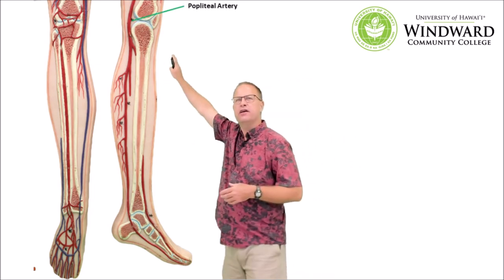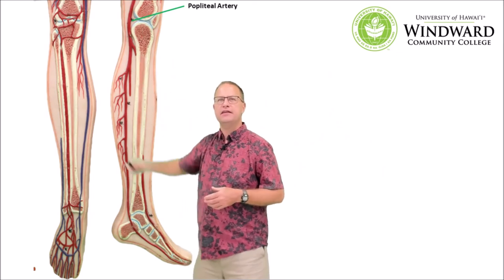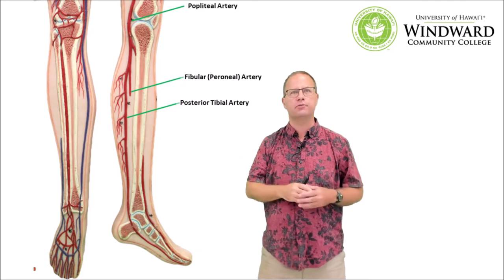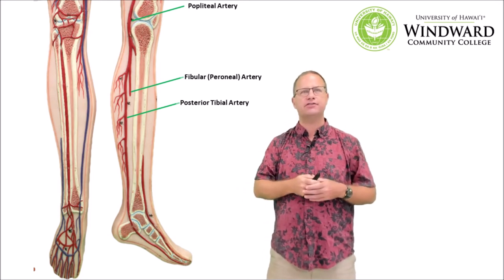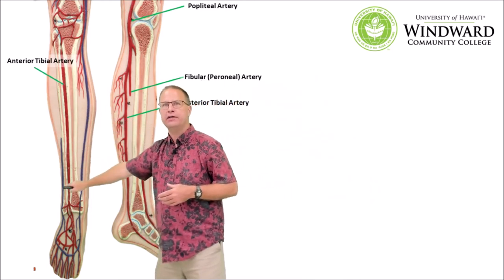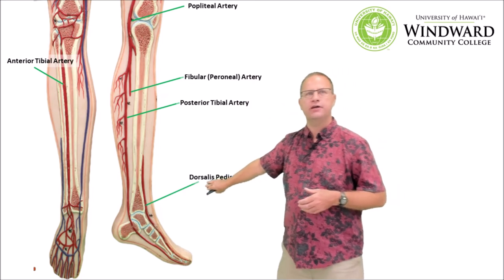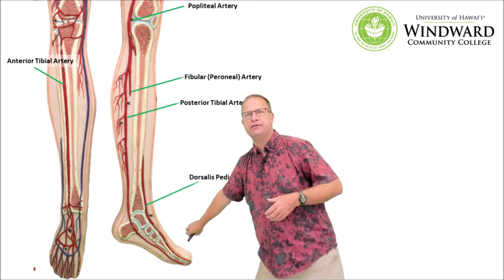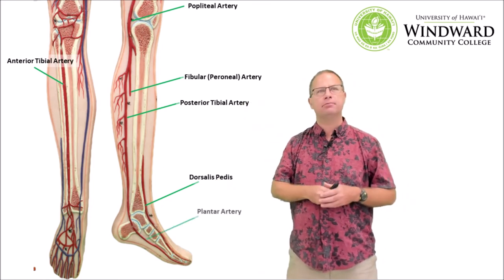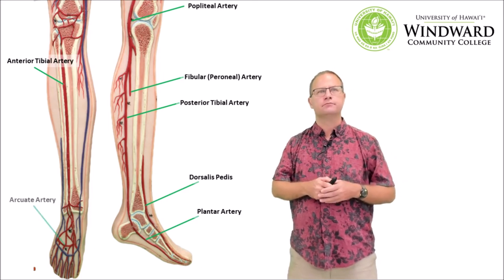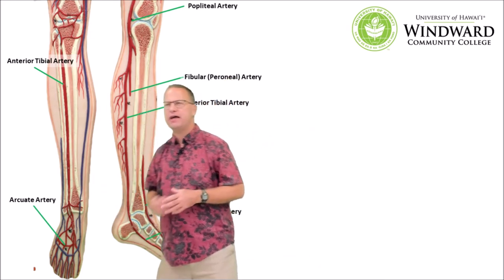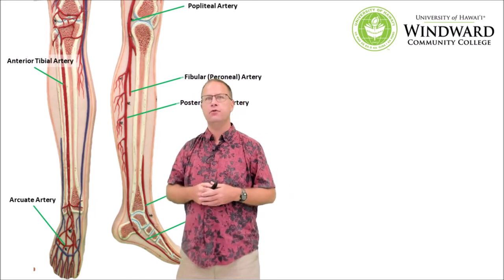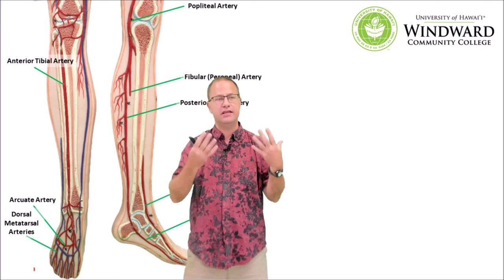Now let's tackle the blood vessels of the lower legs. The popliteal artery is an extension of the femoral artery and branches into a fibular or peroneal branch and a posterior tibial branch. We also have an anterior tibial artery on the front of the shin, which eventually gives rise to the dorsal pedis artery — the major blood vessel on the top of the foot. On the bottom of the foot we have a plantar artery, and those arteries branch to form arcuate arteries, then dorsal metatarsal arteries, and eventually the arteries in the digits themselves.